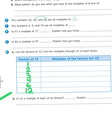So, now it says, list the multiples through 12 of each factor. So, what I'm being asked to do here is skip count by the factor, the numbers in this column right here, until I hit 12. So, list the factors of 12, and list the multiples through 12 of each factor.